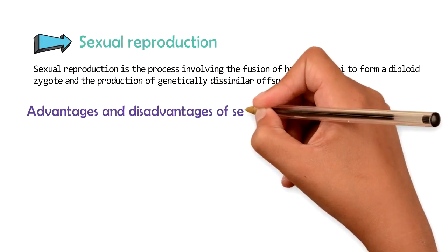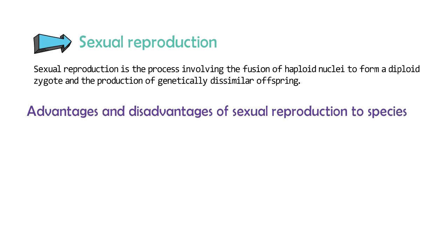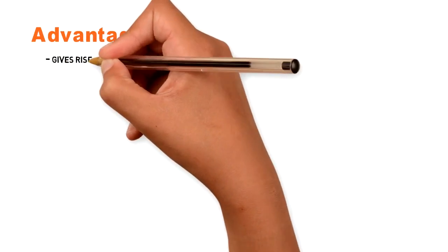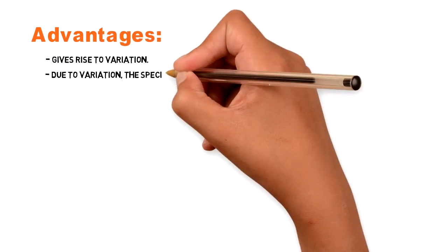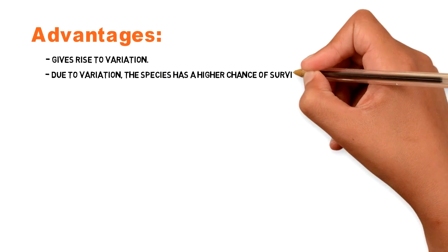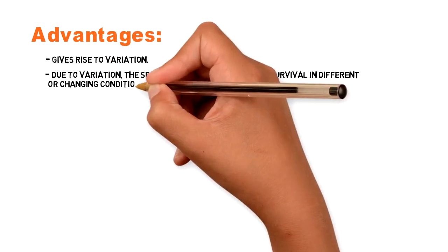Advantages and disadvantages of sexual reproduction to species. Advantages: Gives rise to variation. Due to variation, the species has a higher chance of survival in different or changing conditions.